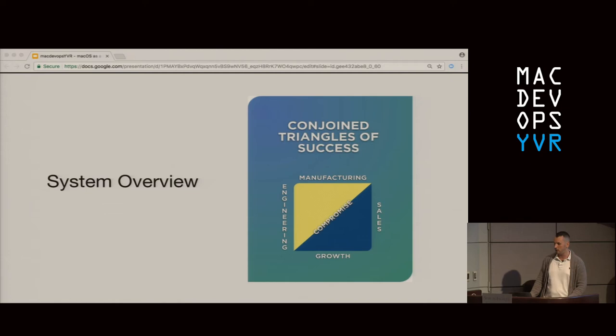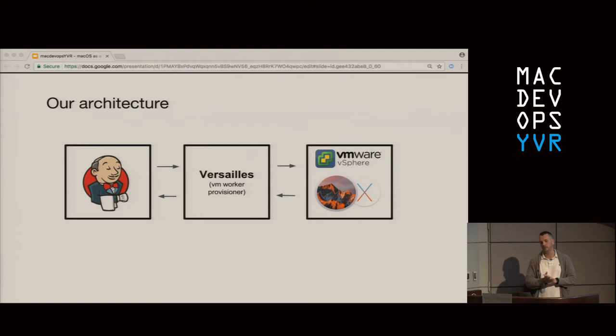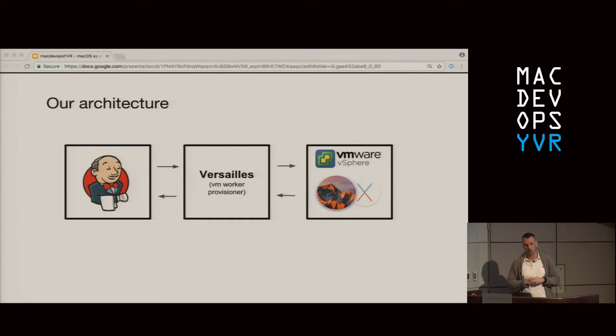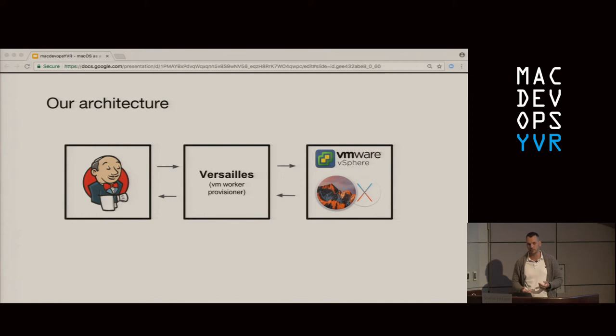Now that we've shared some context, we'll give an overview into the system we built and how it all works together. There are many components to the CI system, but for this talk we'll discuss those that surround our virtual infrastructure. Those components include a macOS VMware VPC and the VMs that run within on Mac Stadium's hardware, Versailles — our VM worker provisioner written in Go — and Jenkins, our main CI workflow orchestration tooling. Developers submitting a code change trigger a Jenkins job, and some piece of infrastructure has to be available to execute the ensuing workflow.